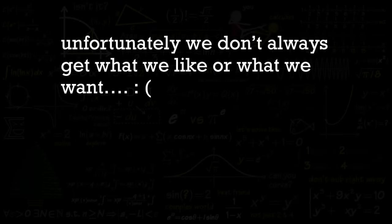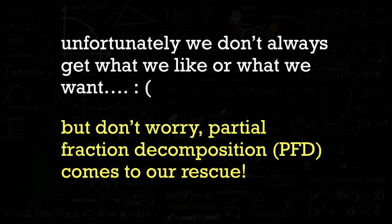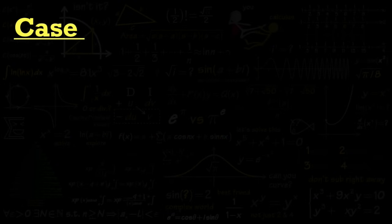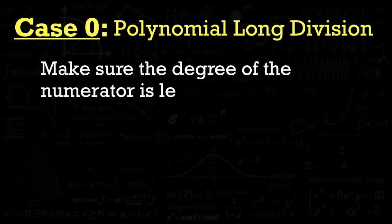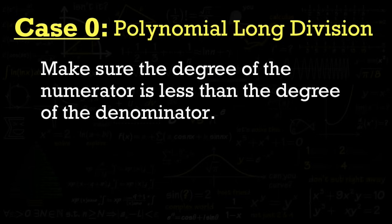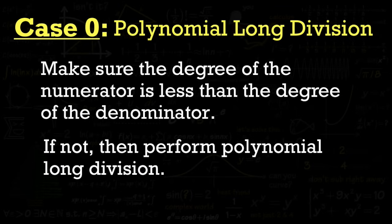Unfortunately, we don't always get what we want — but partial fractions decomposition, PFD (not PDF), will help us out. Case zero: sometimes we have to do polynomial long division first. When we have a rational function, we need to make sure the degree of the numerator is less than the degree of the denominator. If that's not the case, do polynomial long division first before setting up the partial fractions.